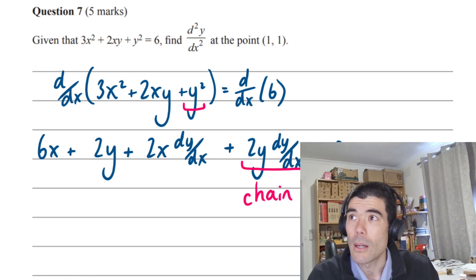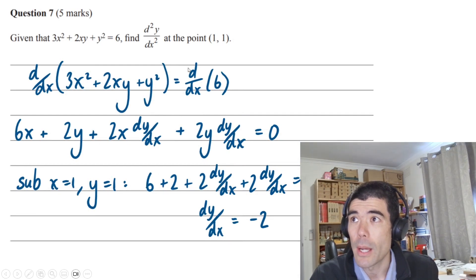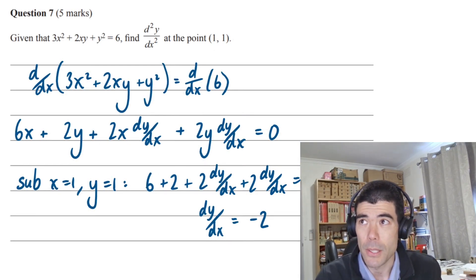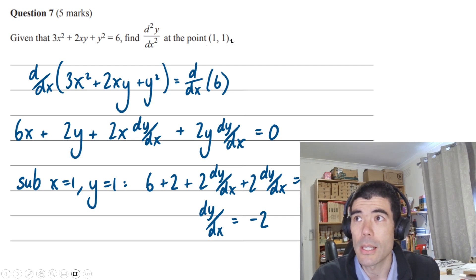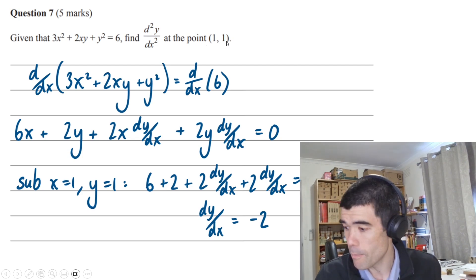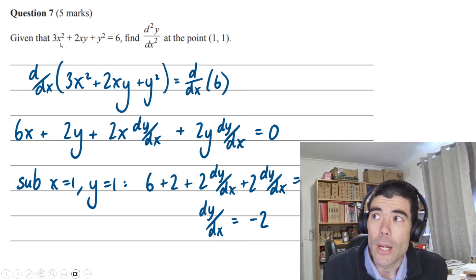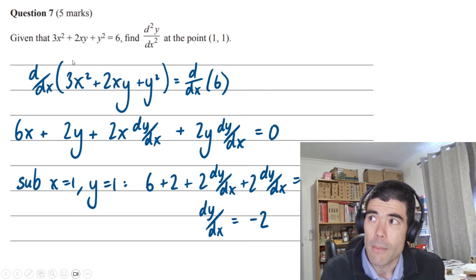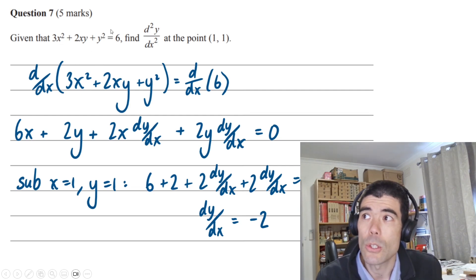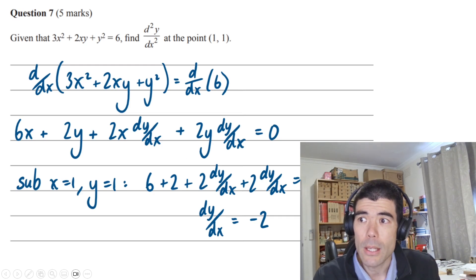Once we get to there, I would sub in x is 1 and y is 1 as early as possible. We're given when x is 1, y is 1. In some cases we just give an x value, then we have to use the original equation to solve for y. But here we can substitute in and then solve for dy/dx to figure out dy/dx is negative 2.